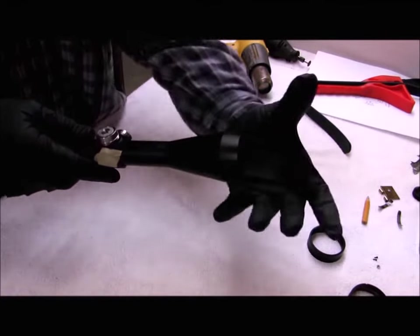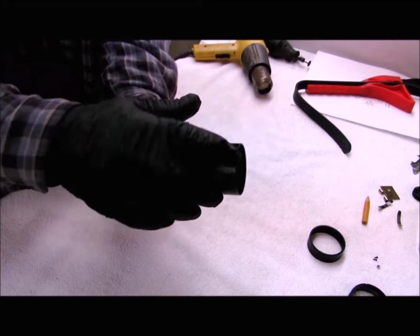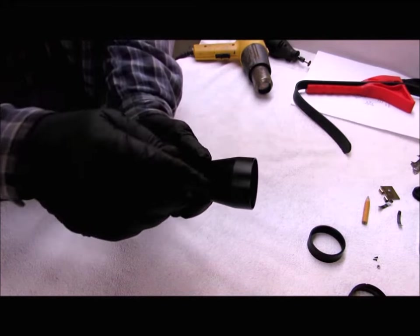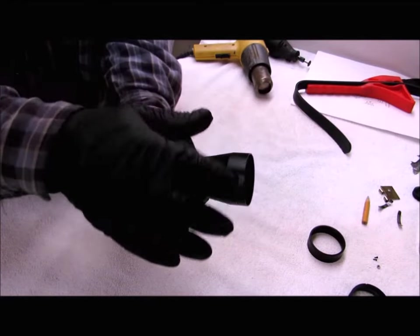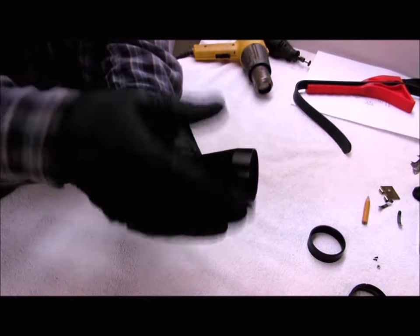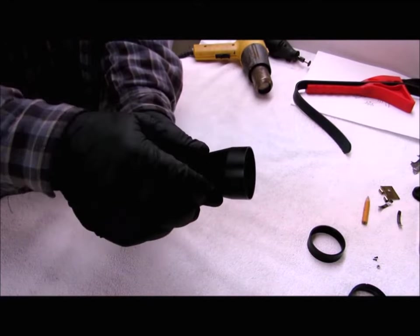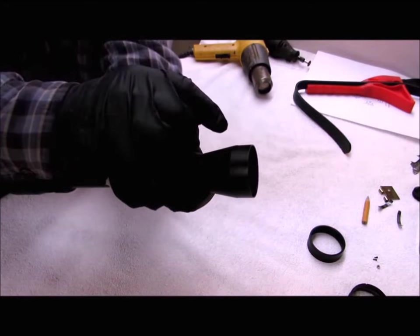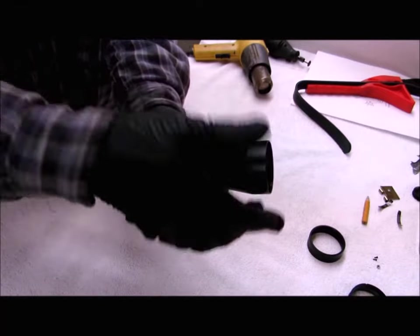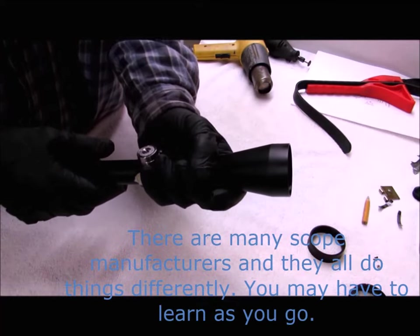Now I've only disassembled one scope that had an adjustable objective lens on it. There was a ring on the scope that had the markings for the yardage and the parallax adjustment. That ring was mounted to the scope using what appeared to be hot melt glue. I just heated it up and I popped the ring back. When I did, it exposed a screw in the scope tube. There was a tang on the lens assembly and that screw was a stop to keep you from removing the lens. I just removed the screw and then screwed the objective lens off the scope tube.